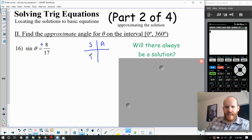If we use the acronym All Students Take Calculus as a shortcut for remembering where each trig value is positive, all values are positive in quadrant one, including sine, and sine is the only positive value in quadrant two, leaving cosine and tangent to be negative. So I have to be in either quadrant one or quadrant two.